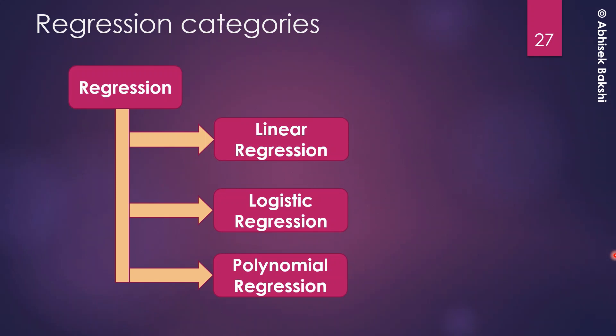Polynomial regression involves multiple factors — poly means multiple — so the equation cannot be linear; it represents a curve. If the pattern of the data points forms a curve, you cannot create a straight line, so you need an equation that represents that curve. This is the basic idea about classification and regression. Now let's move on to unsupervised learning.